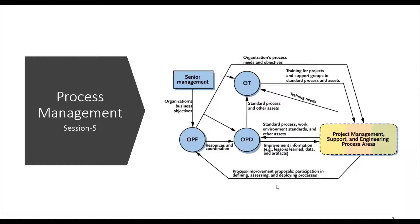Successful process improvement initiatives must be driven by the business objectives of the organization. For example, a common business objective is to reduce the time it takes to get a product to the market. The process improvement objective derived from that might be to improve the project management processes to ensure on-time delivery. Those improvements rely on best practices in the project planning and project monitoring and control process areas.